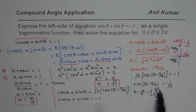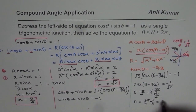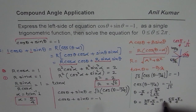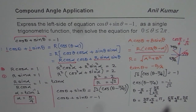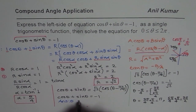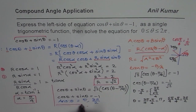Adding π/4 to both solutions: θ = 3π/4 + π/4 = 4π/4 = π, and θ = 5π/4 + π/4 = 6π/4 = 3π/2. So the two solutions are θ = π or θ = 3π/2. These are the values for which the equation cosθ + sinθ = -1 is true.